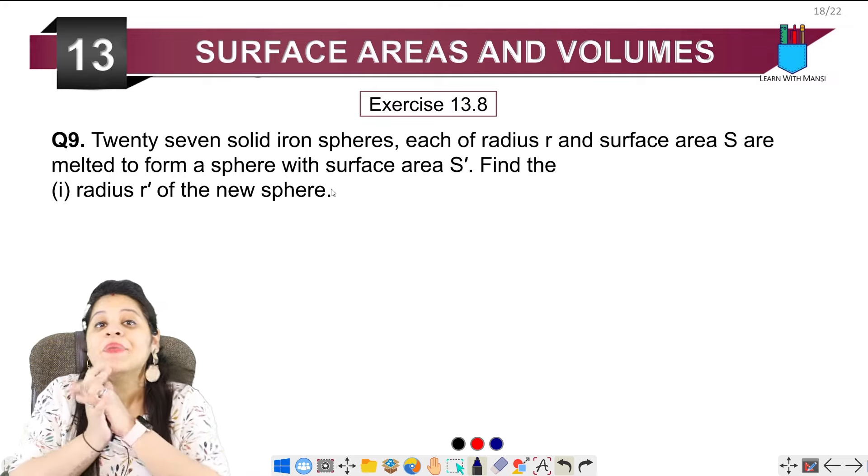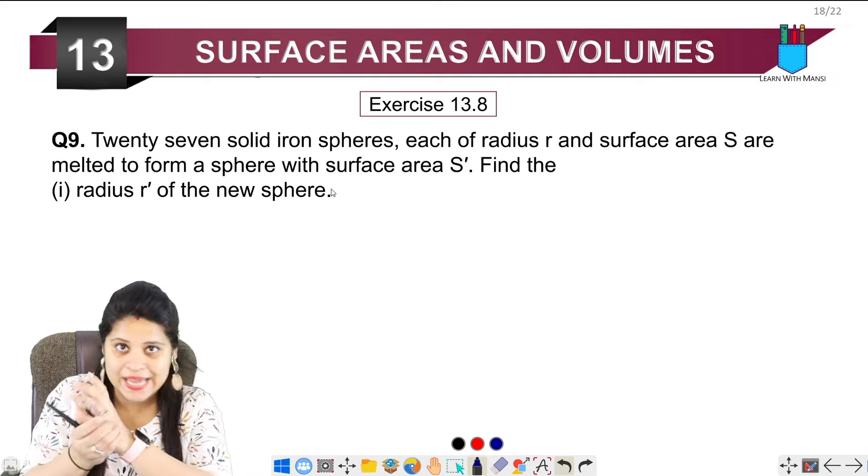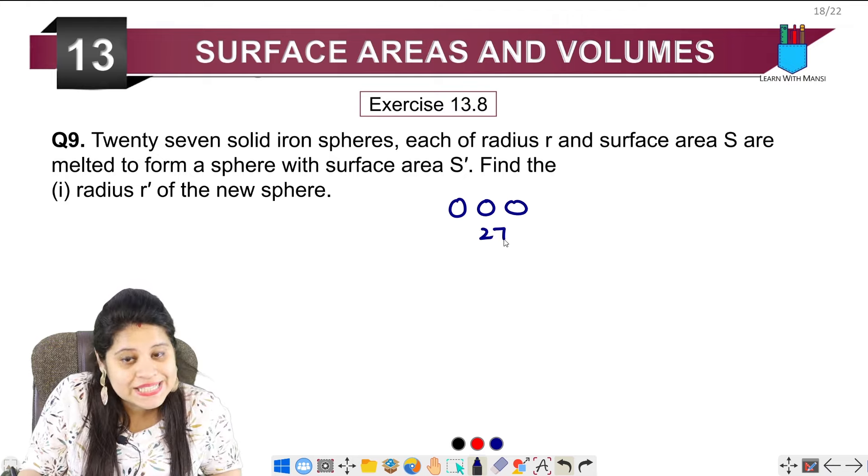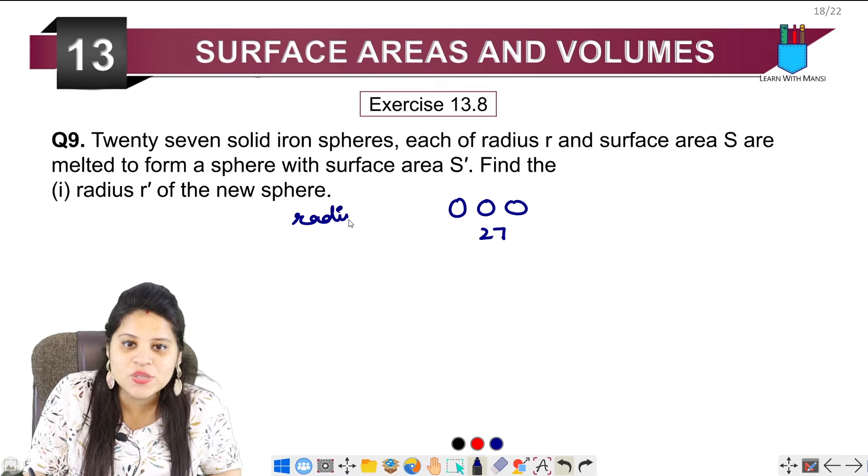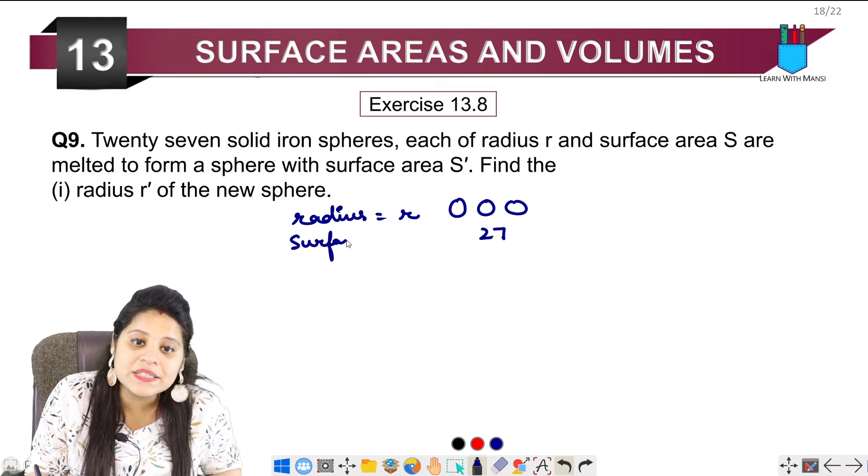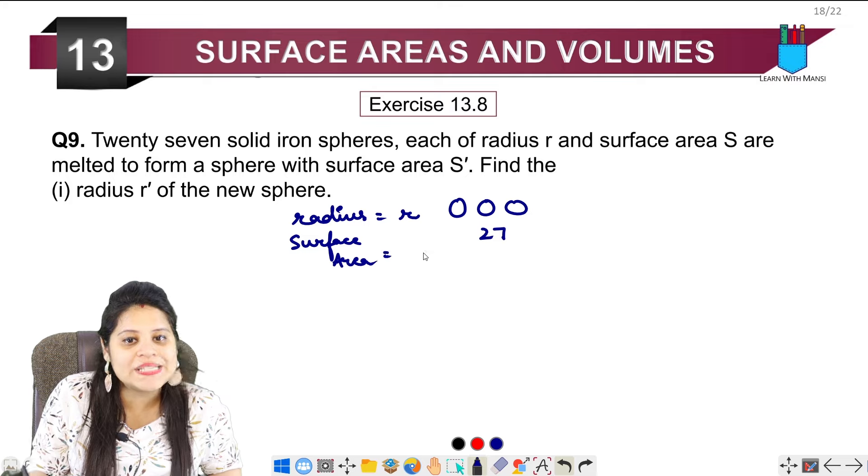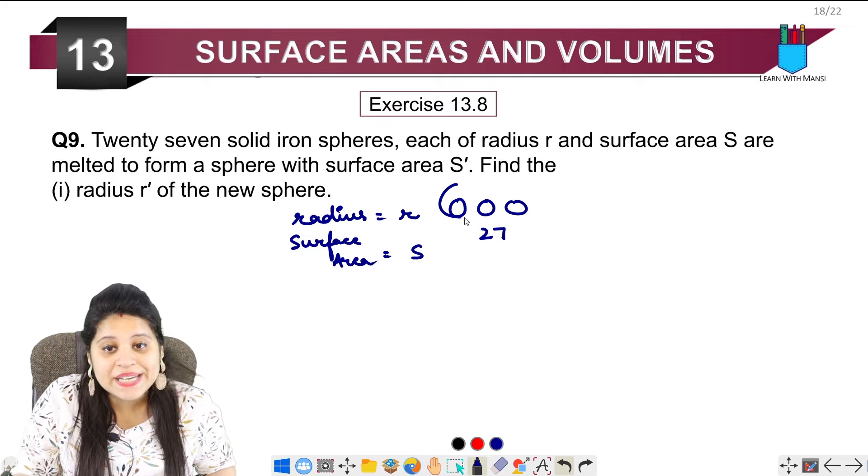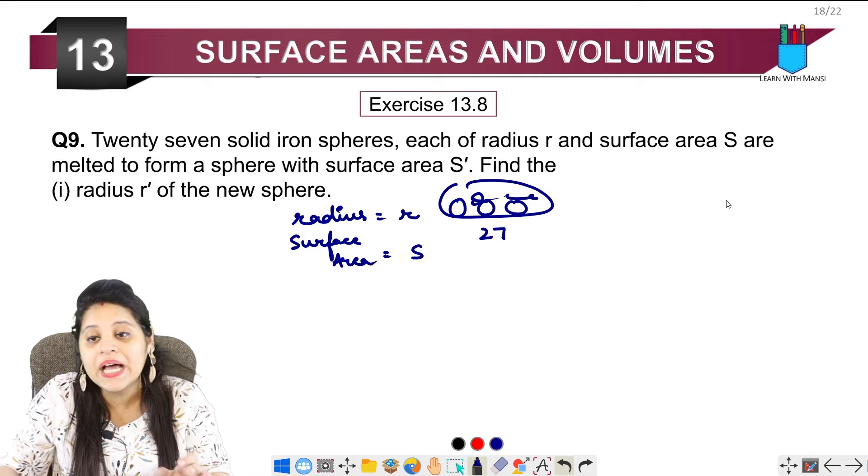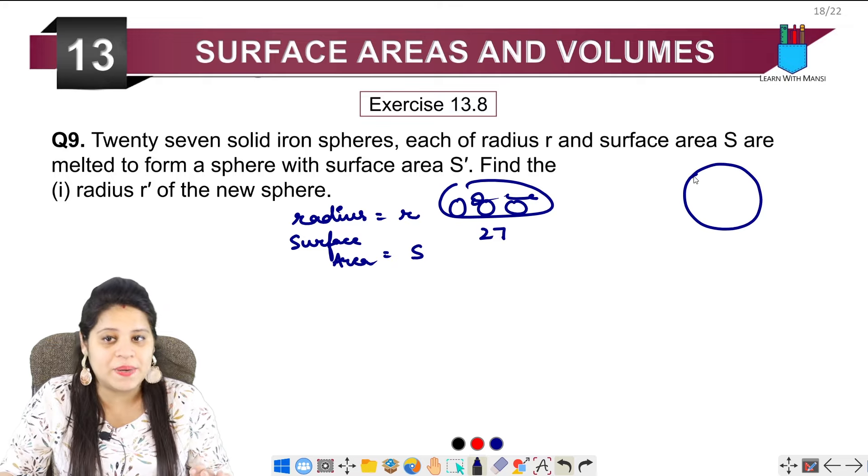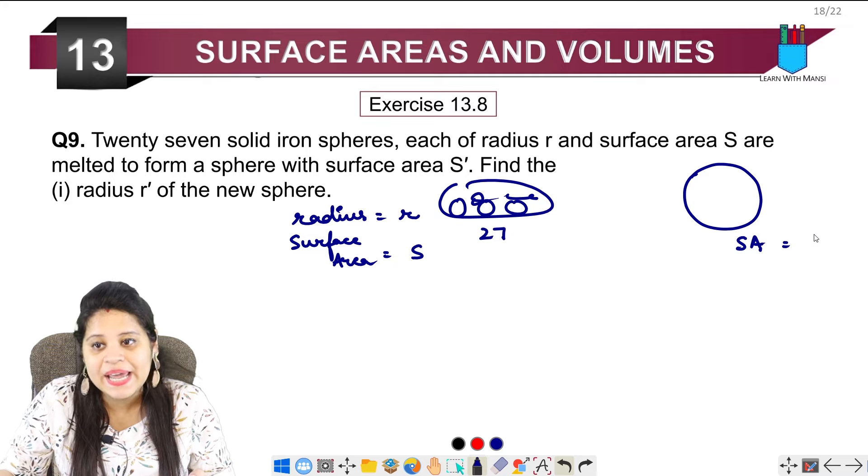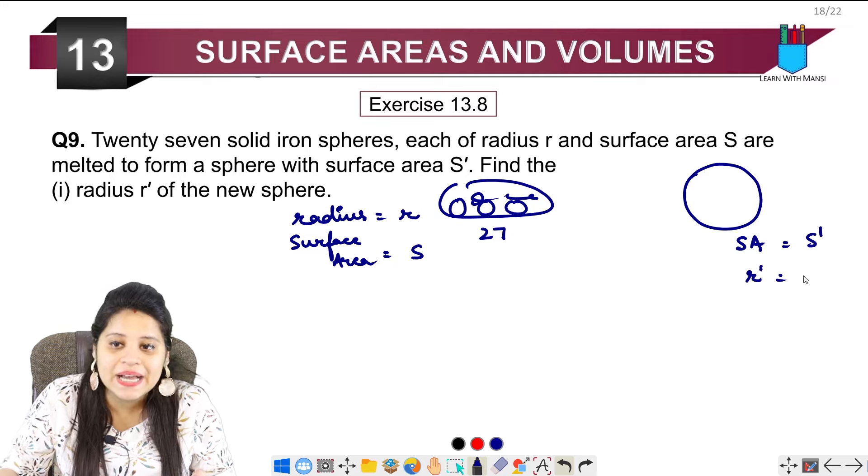So first, we have to understand this. They have 27 solid iron spheres. The radius is represented as R, and the surface area is represented as S. Now, all these 27 spheres are melted to form one big sphere.